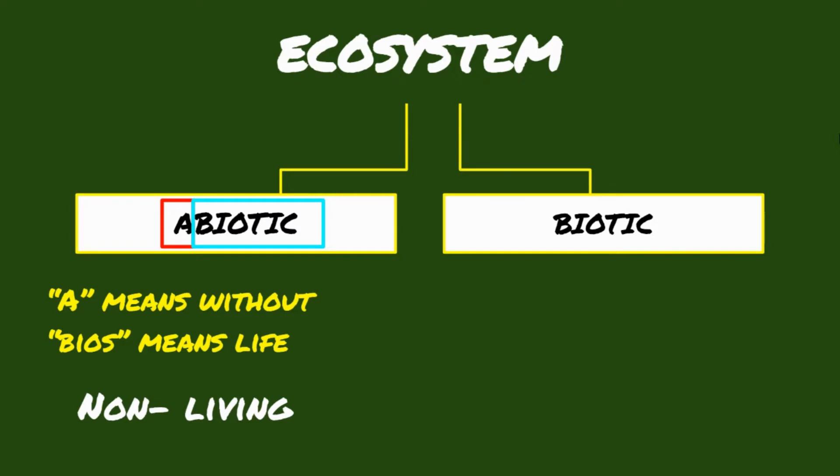On the other hand, the biotic component is the living component of an ecosystem. This includes all living organisms that are dependent on one another. This means that each living organism has a relationship to other living organisms.